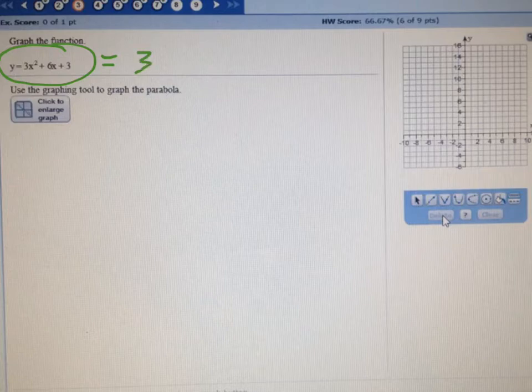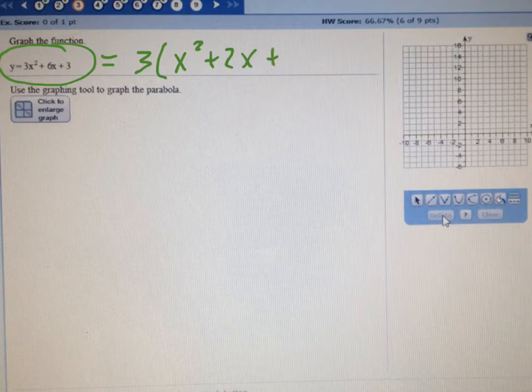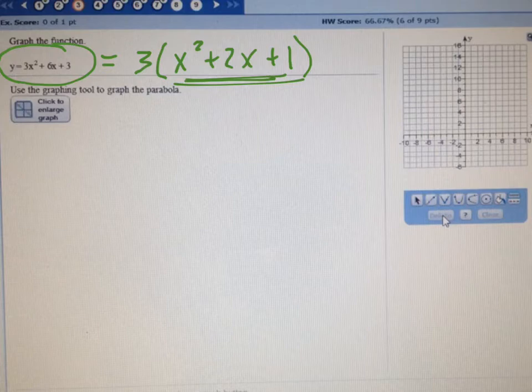First thing to notice is that if you factor out a 3, the problem becomes a lot easier. So remember, factoring is a key. Also, when you factor it, you'll notice this now factors even further into a perfect square.